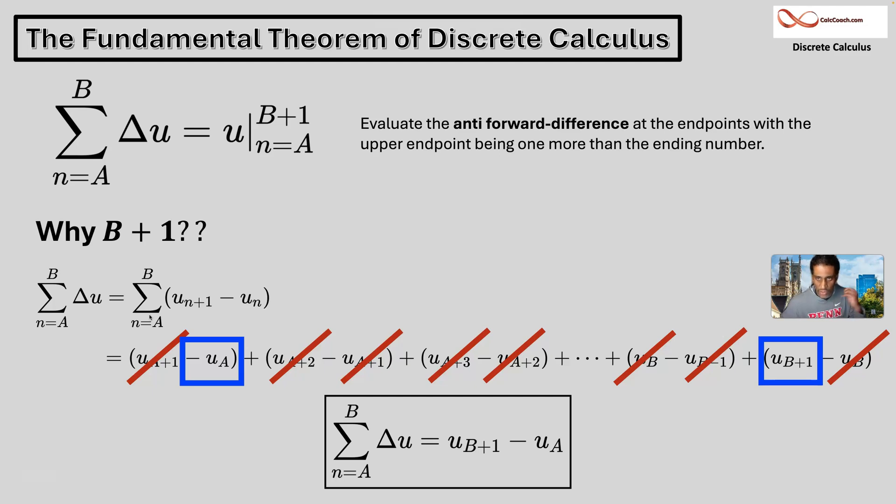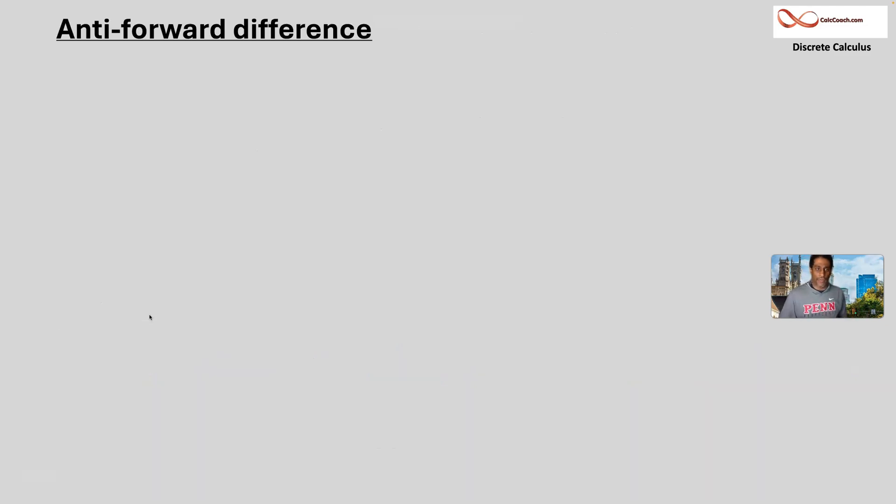We're going to have the U sub B plus one. And from that, we're going to take away the U sub A. So it's the fundamental theorem of discrete calculus. And we're going to use it after we study how to really work with the forward difference in reverse, the anti-forward difference.